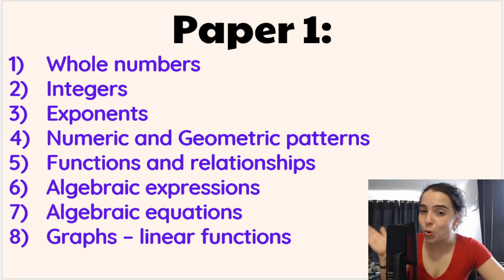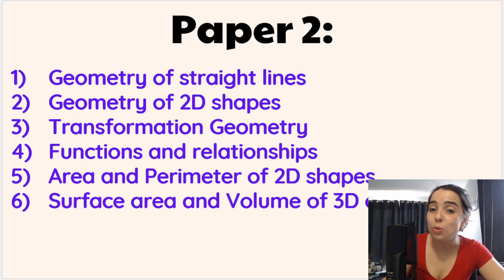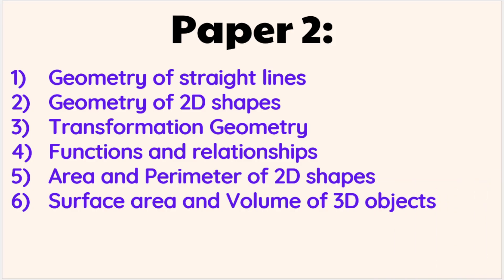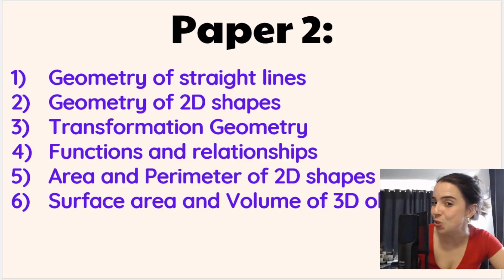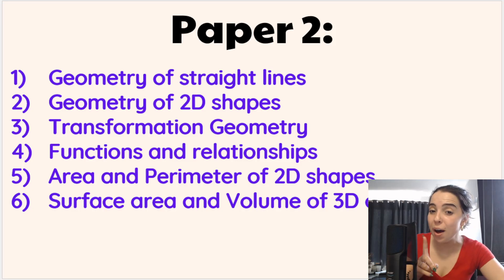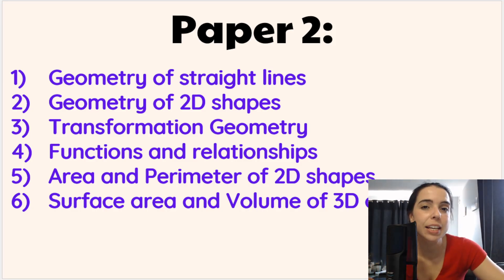These are the broad topics for paper one, but don't go anywhere. I'm going to show you exactly what you need to know under each of these topics. And these are the broad topics that you need to know under paper two. Yes, you have to write two final exam papers, paper one and paper two, and each paper counts 75 marks. That is a recommendation by the Department of Basic Education. Your school might be doing something different. So always remember to check with your teacher.